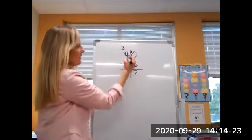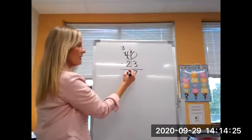Ten take away three is seven. Three tens take away two tens is one ten.